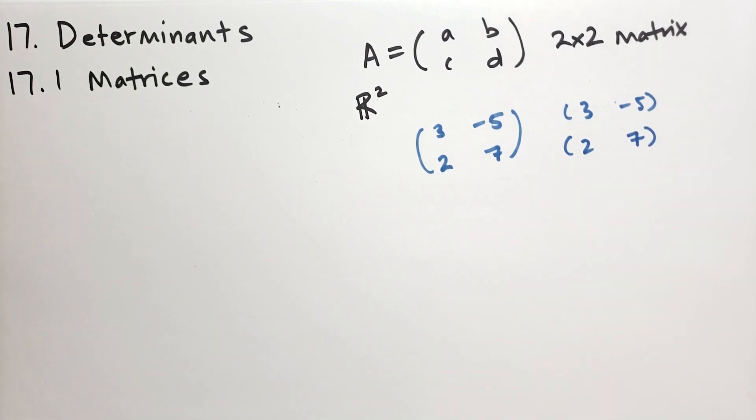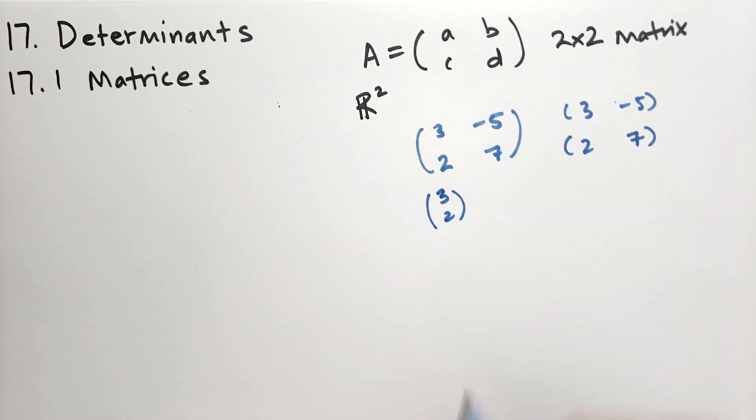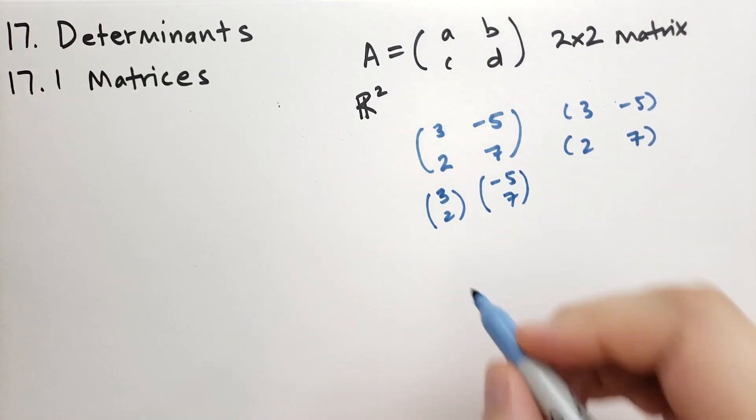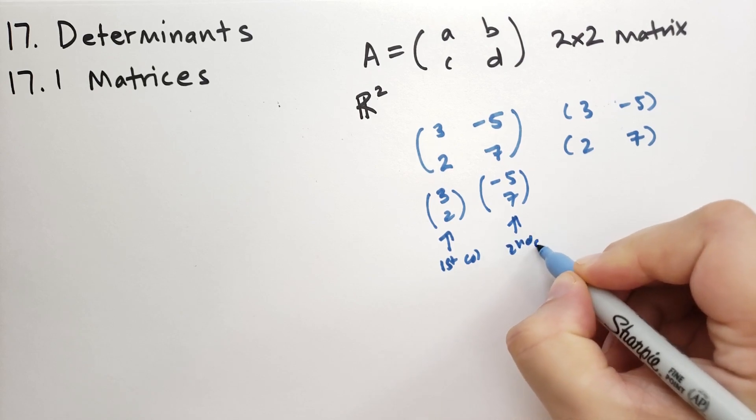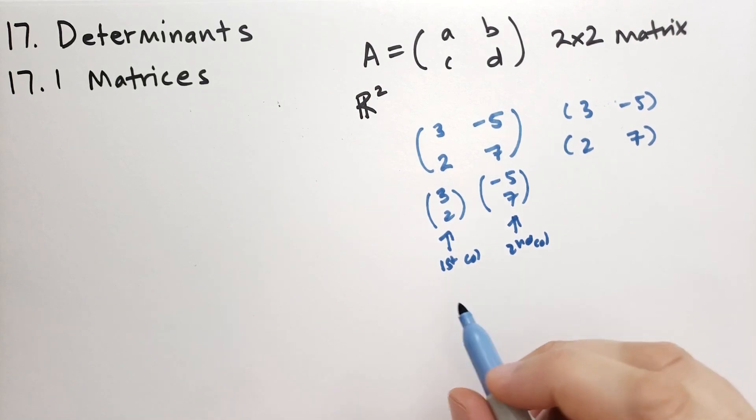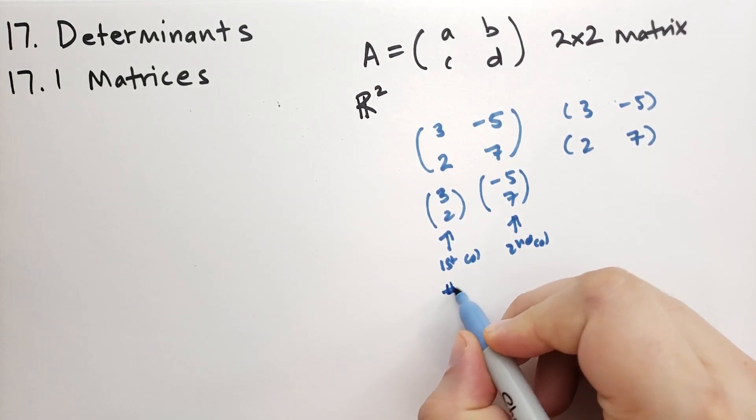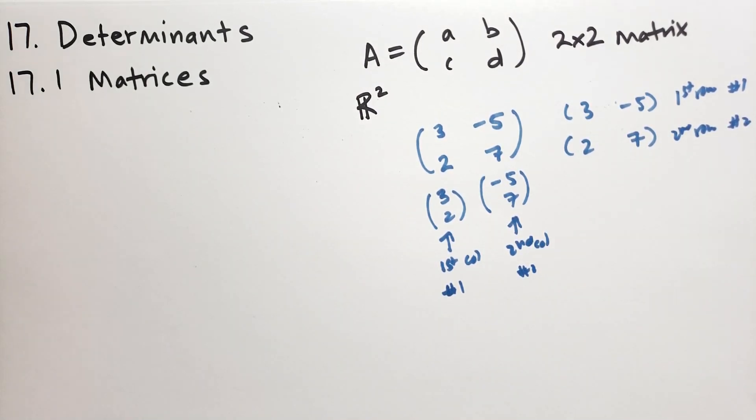But it also has columns, so we have the column 3, 2 and the column minus 5 and 7. We're going to call this the first column and this the second column. Unlike in computer programming with Python which is 0-based, we're going to use 1-based. So this is column number 1 and column number 2. This is the first row, or row number 1, and this is the second row, row number 2.